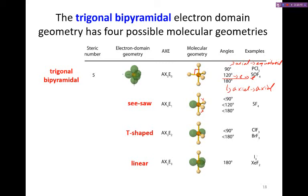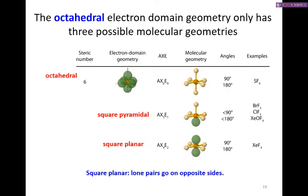For octahedral electron domain geometry with six total domains, we see a maximum of two sets of lone pairs, as more would be too repulsive for a stable molecule. With one lone pair the molecule is square pyramidal; with two lone pairs they must go on opposite sides, giving a square planar geometry where all elements are 90° or 180° from each other.